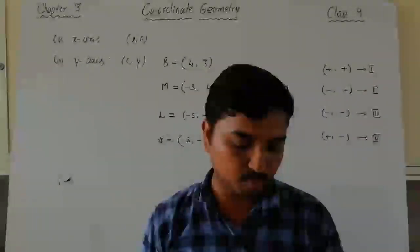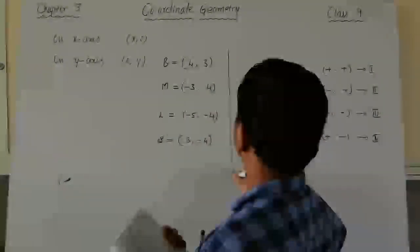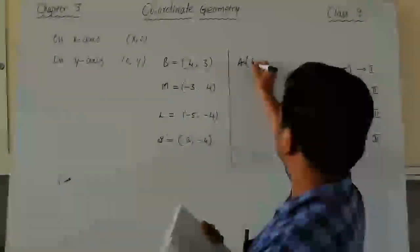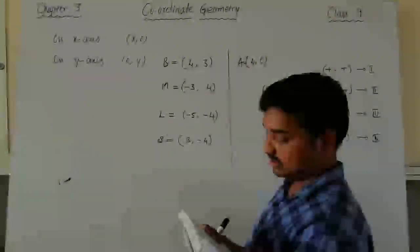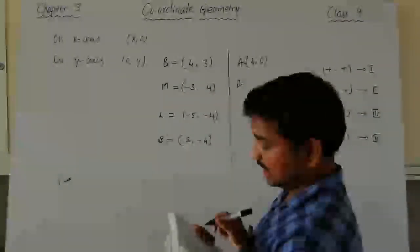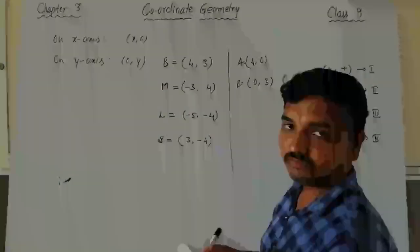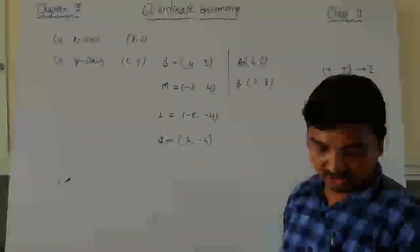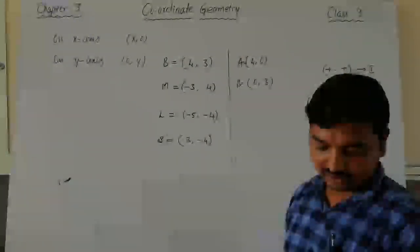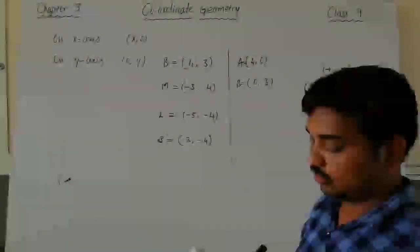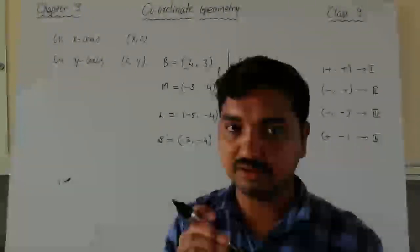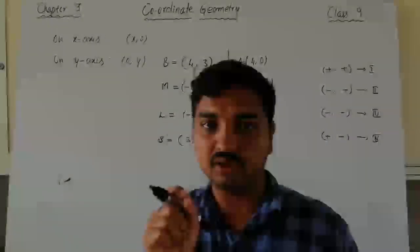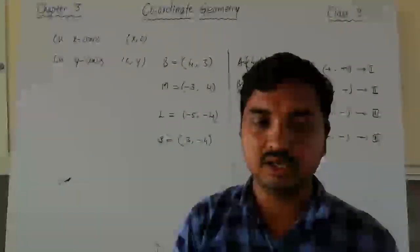For point A lying on the x-axis at 4, its coordinates are 4 comma 0. For point B lying on the y-axis, its coordinates are 0 comma 3 because it is on the y-axis. Similarly you can identify the coordinates of C and E. The coordinates of E are two-thirds comma 0 — this value is already mentioned in the figure below the point. So when the point is placed at a fraction between integers, the value is given to you.